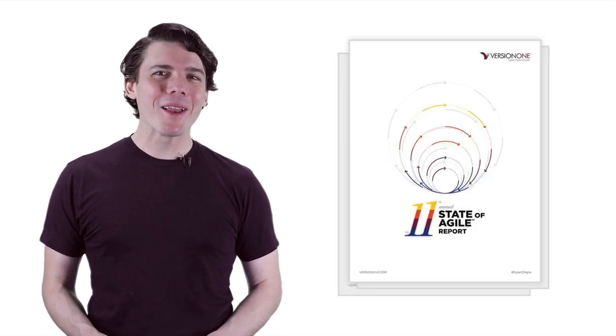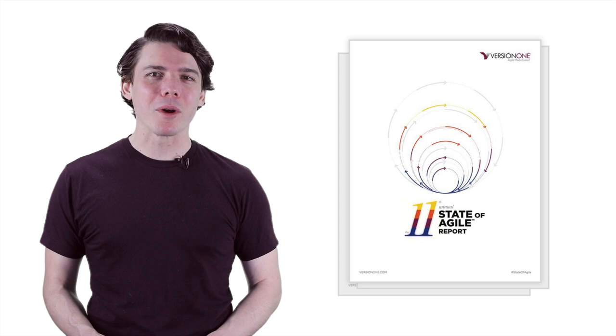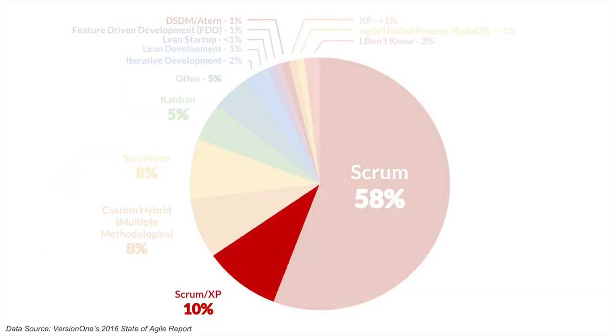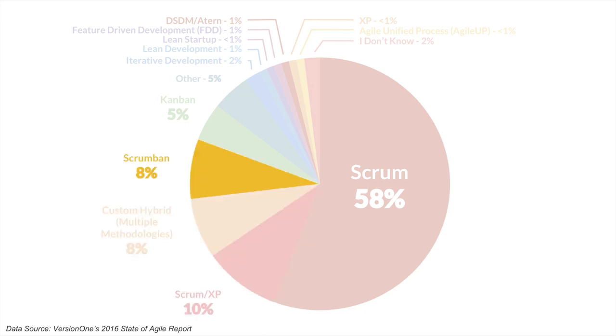Agile refers to any framework that's aligned with Agile's core values and principles. Per VersionOne's 2016 State of Agile report, Scrum is the most common Agile framework, followed by a Scrum Extreme Programming hybrid, homegrown hybrids, a Scrum Kanban hybrid, and Kanban.